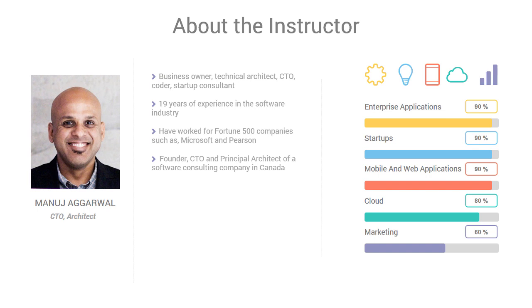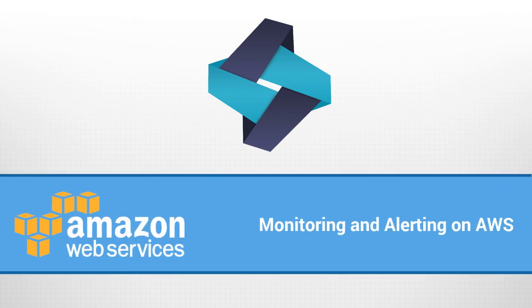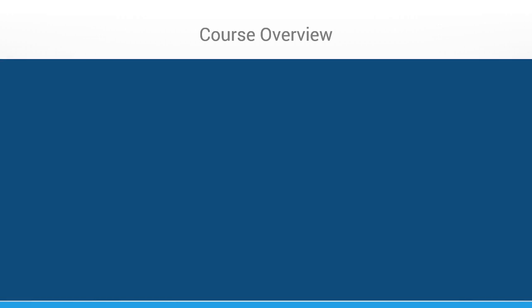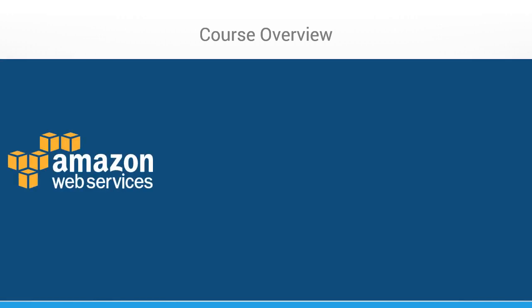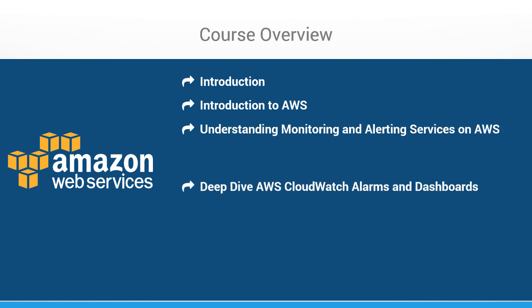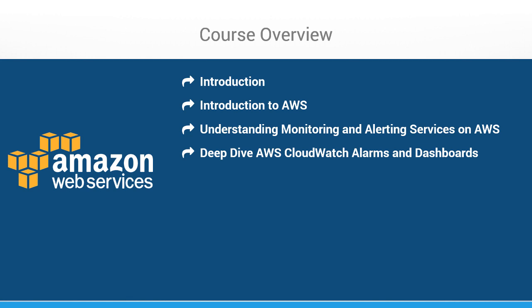Some of these startups went on to become successful companies and had nice exits. In this course, alerting and monitoring your AWS infrastructure with AWS CloudWatch, we will get an in-depth look at the de facto monitoring and alerting service offered by AWS called CloudWatch. AWS CloudWatch integrates with various other AWS services like EC2, RDS, EBS, ELB, and many others. During this course, we will dive deep into many of these services and learn how we can monitor the key metrics available for them.